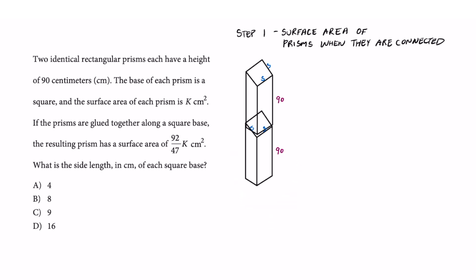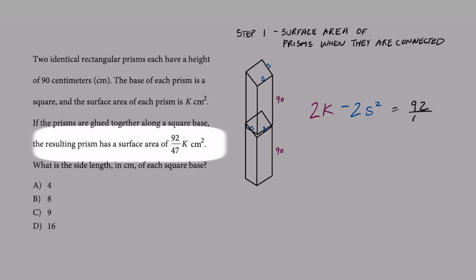That means the total surface area of this new shaped stack together is going to be 2K, but we are not exposing those two squares. So we got to subtract 2S squared. And that represents the two squares that are not exposed. Once again, that is going to equal 92 over 47 K from what this says.